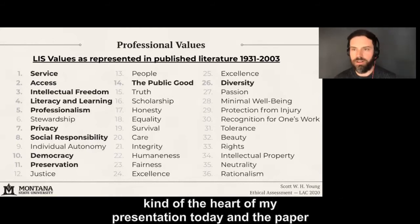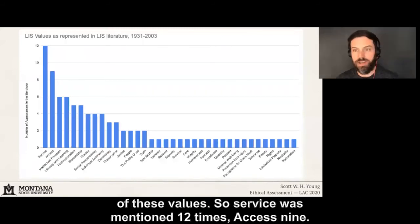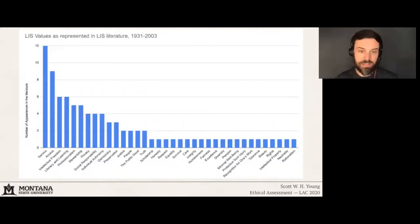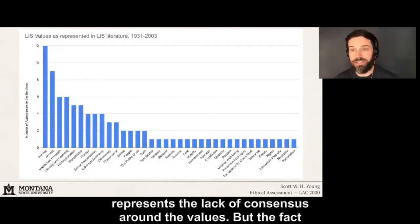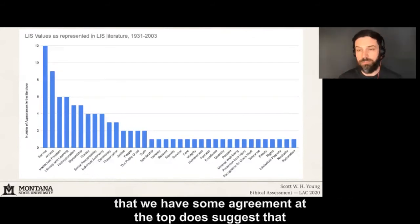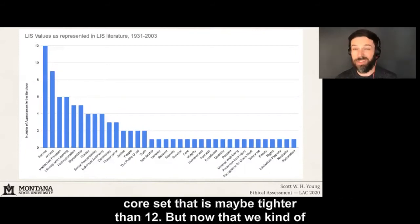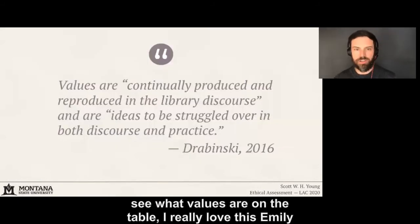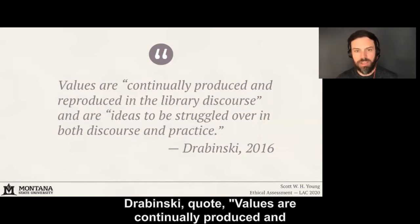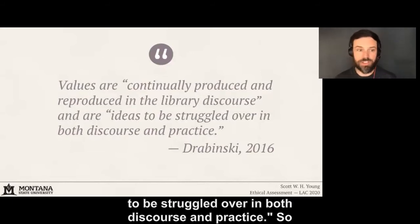This is the heart of my presentation today and the paper that will be in the proceedings. Here's a visual representation of these values — service was mentioned 12 times, access nine, and so on down the list. The long tail in the graph represents the lack of consensus around the values. But the fact that we have some agreement at the top suggests there's some possibility to identify an actual core set, maybe tighter than 12. I really love this Emily Dubinsky quote: 'Values are continually produced and reproduced in library discourse, and they are ideas to be struggled over in both discourse and practice.'